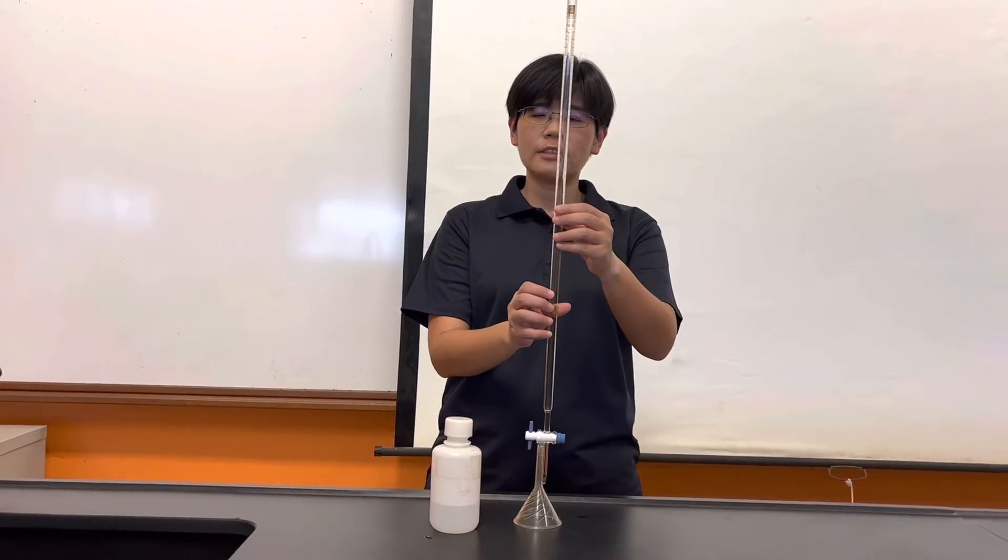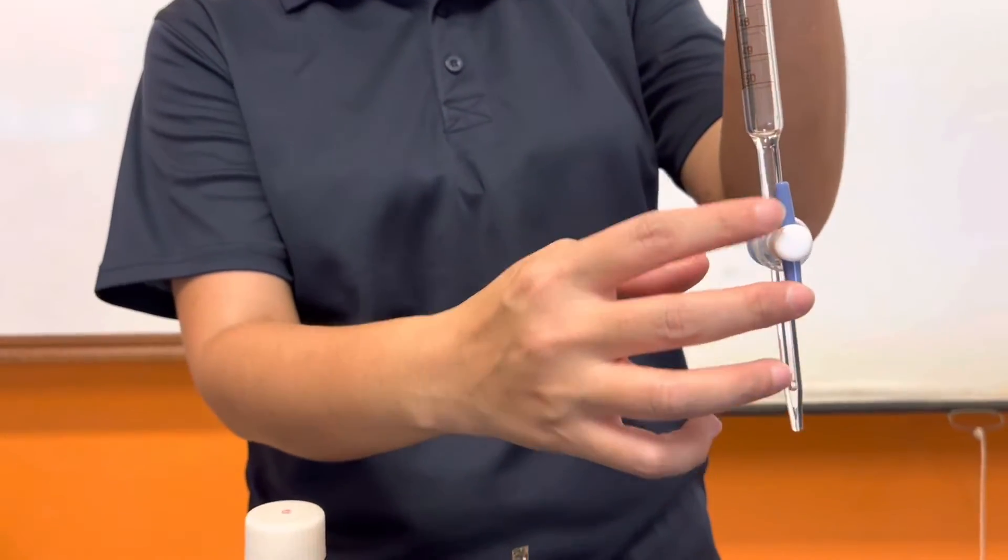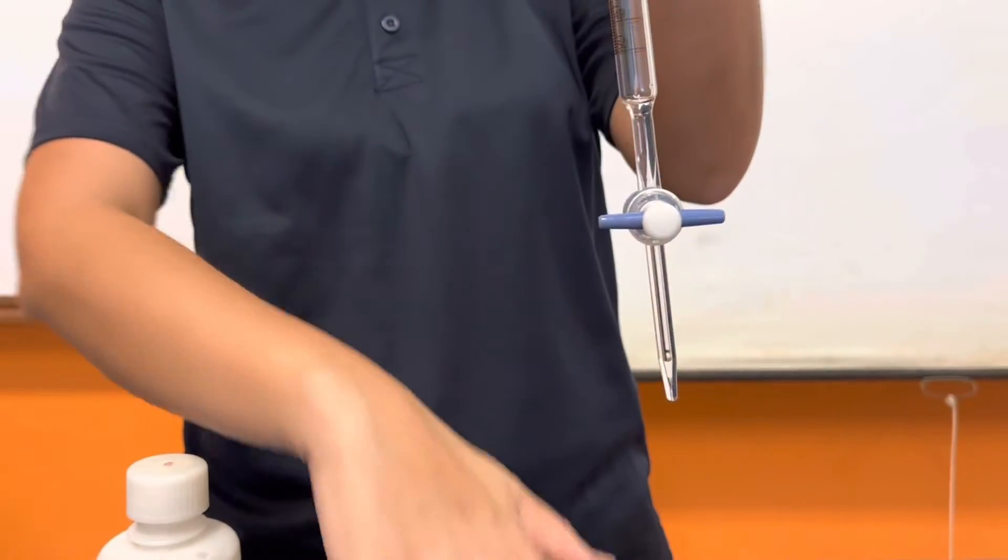So this is the burette. The first thing that we need to do is to make sure that the tap of the burette is closed. Turn it so that it is parallel to the ground.